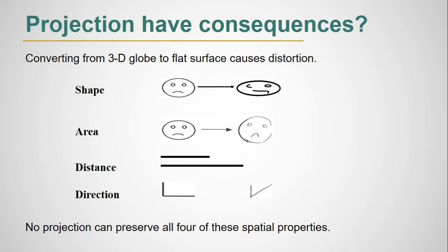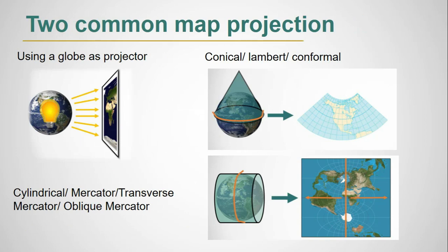Projection has some consequences. Converting from 3D globe to flat surface causes distortion like shape, area, distance, and direction. No projection can preserve all four of these spatial properties. Two most common map projections are cylindrical projection and conical projection.